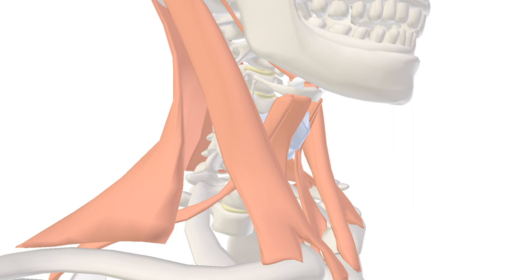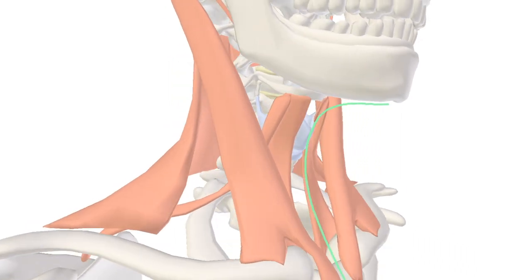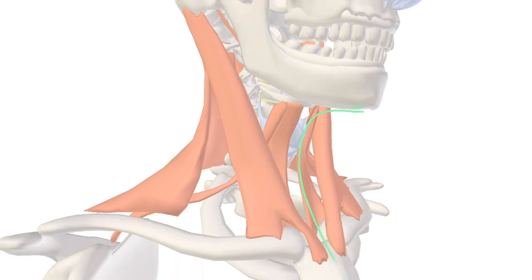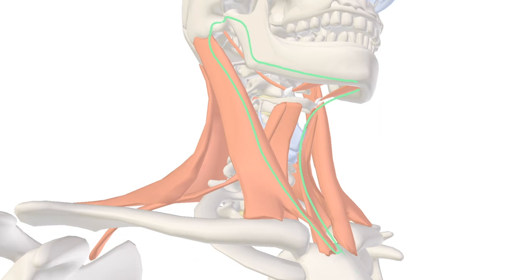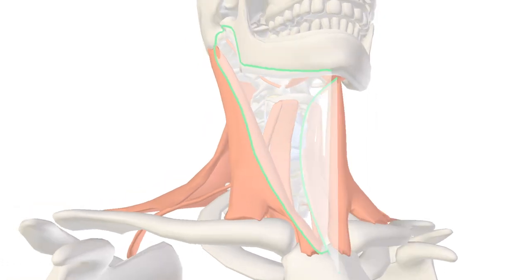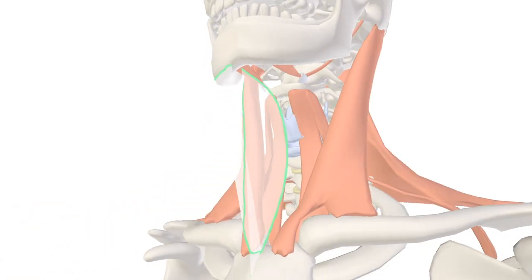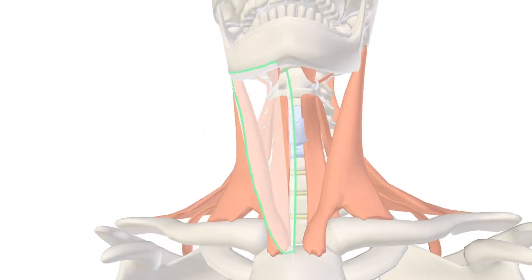We'll start off with the anterior triangle. Its medial border is the midline of the neck, its superior border is the mandible all the way back, and the lateral border is the sternocleidomastoid muscle. Super simple — think jawline, midline, and sternocleidomastoid.